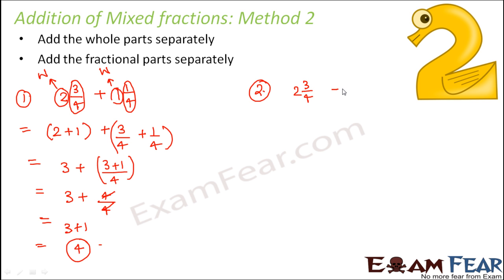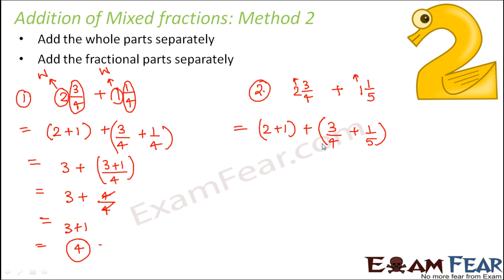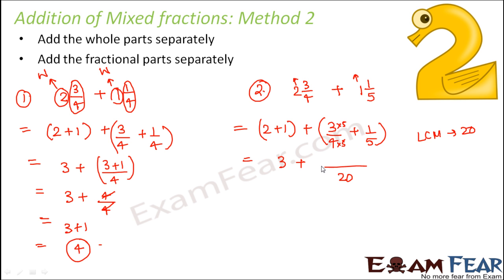Let's look at another example with Method 2: 2¾ + 1⅕. Again, pick the whole numbers — 2 and 1 — and add them separately: 2 + 1 = 3. Add the fractional parts 3/4 and 1/5 separately. Since they are unlike, take the LCM of 4 and 5, which is 20. Multiply 3/4 by 5 to get 15/20, and multiply 1/5 by 4 to get 4/20. So 3/4 + 1/5 = 19/20. This gives 3 + 19/20.